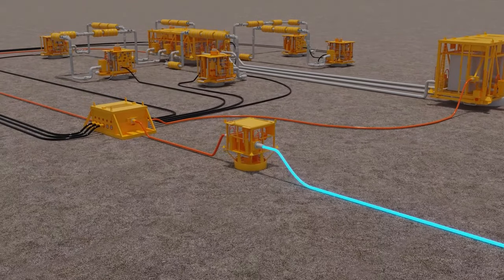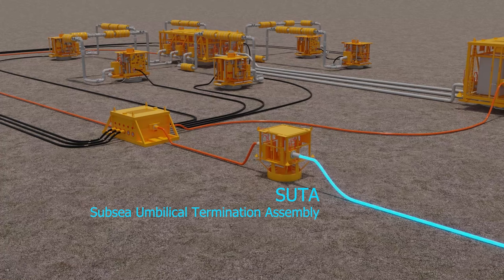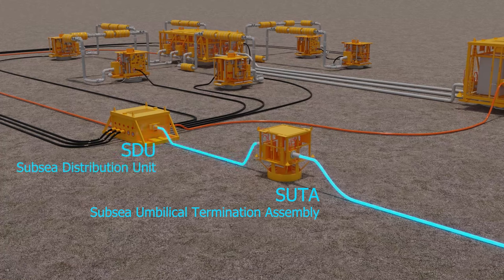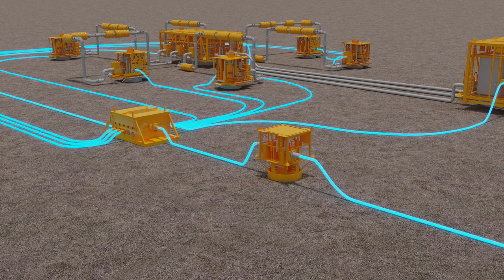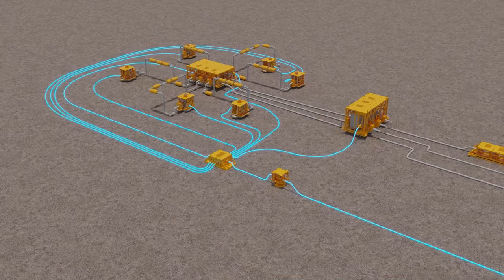The umbilical is connected to a SUTA and then connects to the SDU and then distributes the cables to the rest of the subsea system. This is only the beginning of the network.